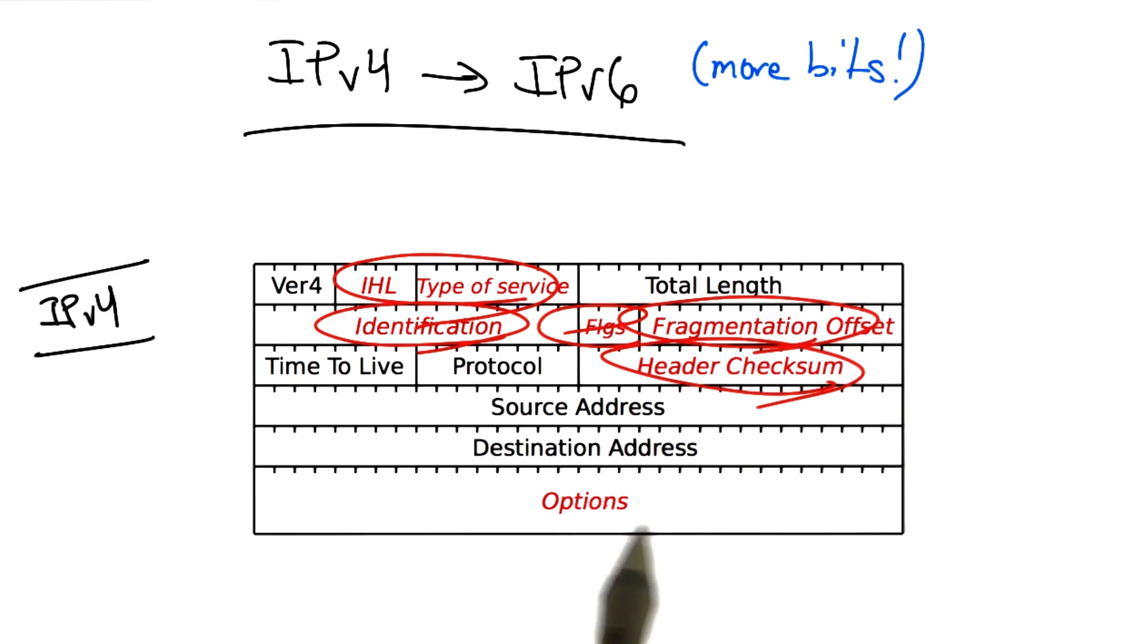Here's a picture of the IPv4 protocol header. All of the fields shown in red have basically been removed in IPv6, resulting in both a much simpler header and addresses that are much larger.